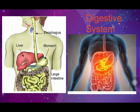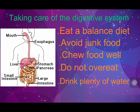The process of digestion is carried out by the digestive system. The main organs of the digestive system are the mouth, food pipe, liver, stomach, small intestine, large intestine, and anus. Now I will tell you how to take care of your digestive system.